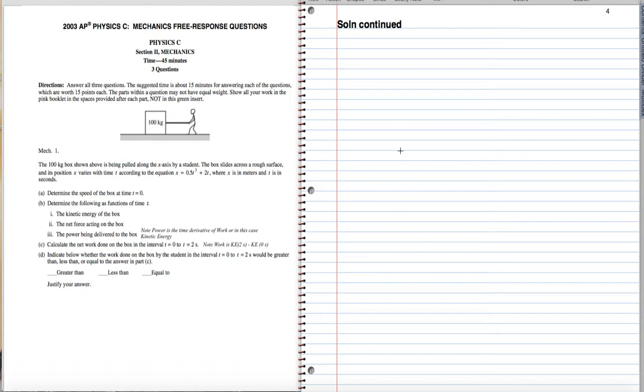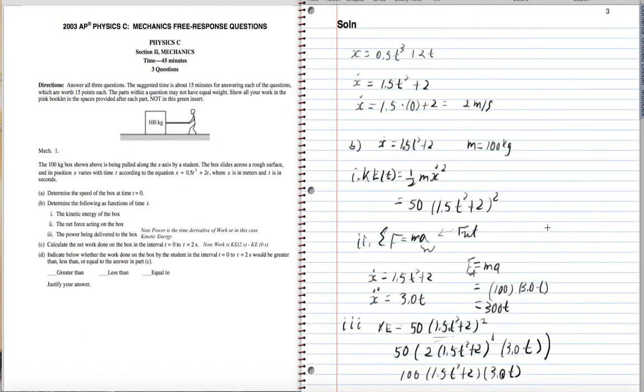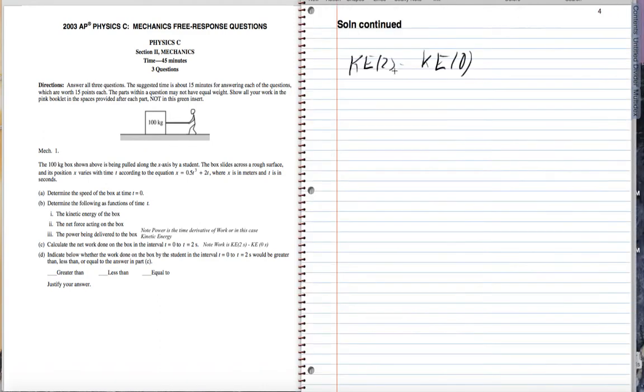Now the work done on the box between the interval 0 to 2 seconds. So that was supposed to say solution. How naughty. Let's change that. Now the work done. So that is going to be the KE at 2 seconds minus the KE at 0 seconds, which is the formula we came up with in the previous video. That was part of your homework. So let's look at the kinetic energy formula. Again, we have this 50 times 1.5 t squared plus 2 quantity squared is the kinetic energy.